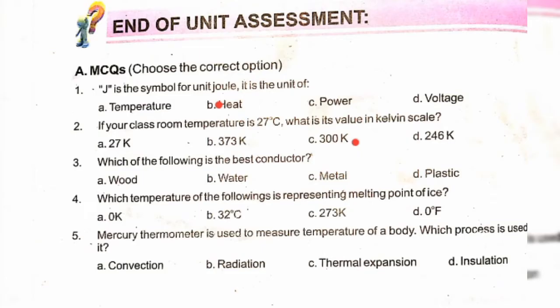Which material is the best conductor? Option C: metal. Which temperature on the scale represents the melting point of ice? Option C: 273K. A mercury thermometer is used to measure body temperature — which process is used? Thermal expansion. Option C.